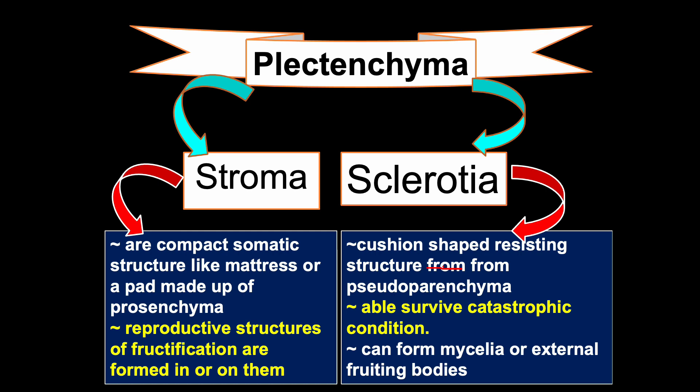Sclerotia are cushion-shaped resting structures that form from pseudoparenchyma. They are able to survive under catastrophic environmental conditions for many years, and can form mycelia or external fruiting bodies. A sclerotium is a resting body formed by aggregation of somatic hyphae into dense, rounded, flattened, elongated, or irregularly shaped dark masses. They are thick-walled resting structures containing food reserves. Sclerotia are hard structures resistant to unfavorable physical and chemical conditions, and may remain dormant for longer periods — sometimes several years — or germinate when favorable environmental conditions return, allowing them to attack the host crop.